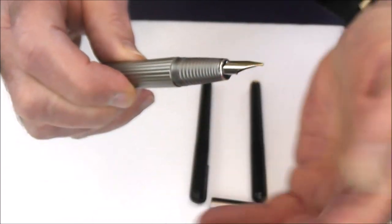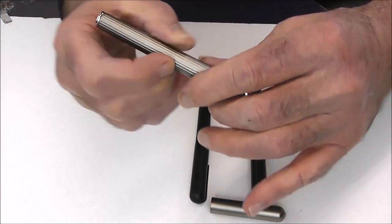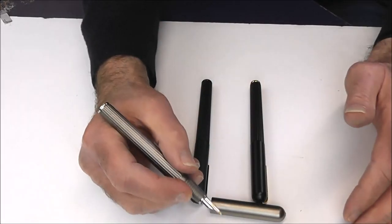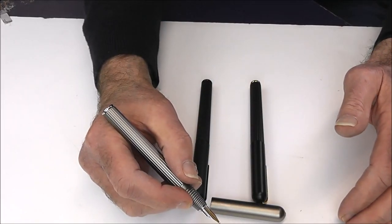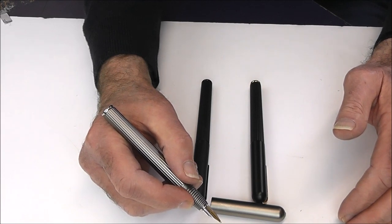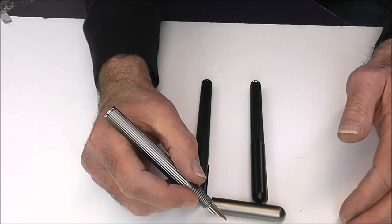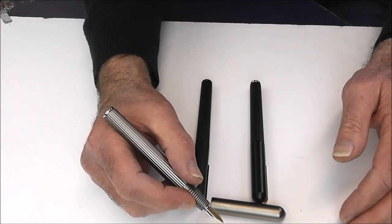Now the other thing that you notice about this pen when you pick it up is its weight. It's a fairly heavy fountain pen. Total weight with the cap on is 46 grams, and it's about 34 grams with the cap off.